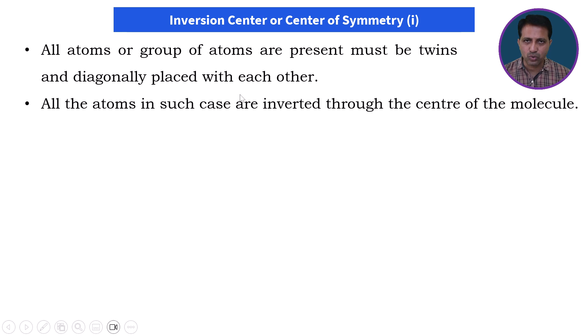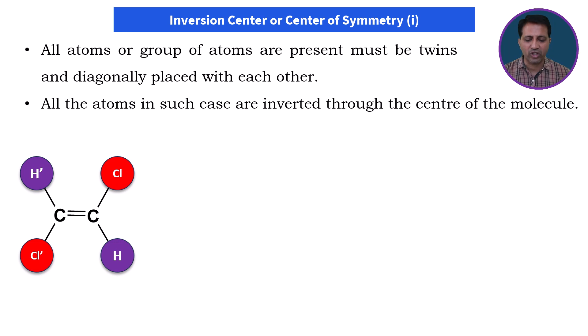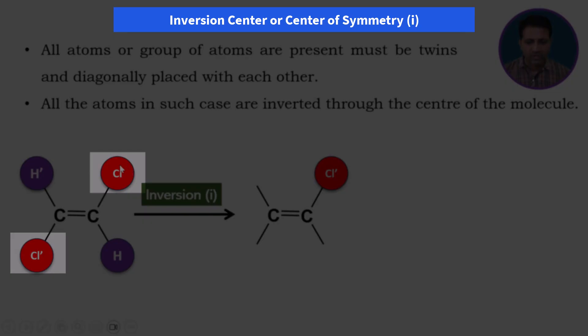Let's understand these two features of inversion center with an example of dichloroethylene molecule. Suppose this dichloroethylene molecule undergoes inversion operation. In such case, this Cl atom gets replaced with Cl' atom.